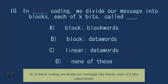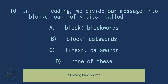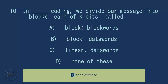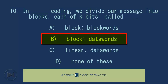Answer: C, simple parity check. Question 10: In blank coding, we divide our message into blocks each of k bits called blank. A) block, block words; B) block, data words; C) linear, data words; D) none of these. Answer: B, block, data words.